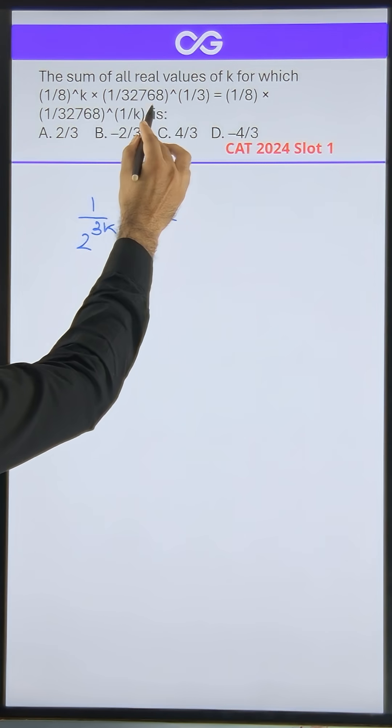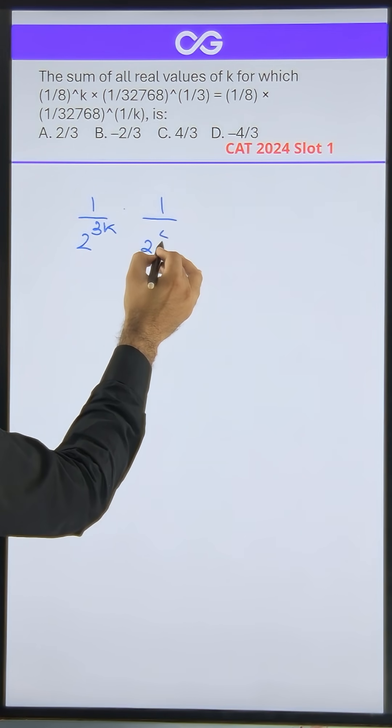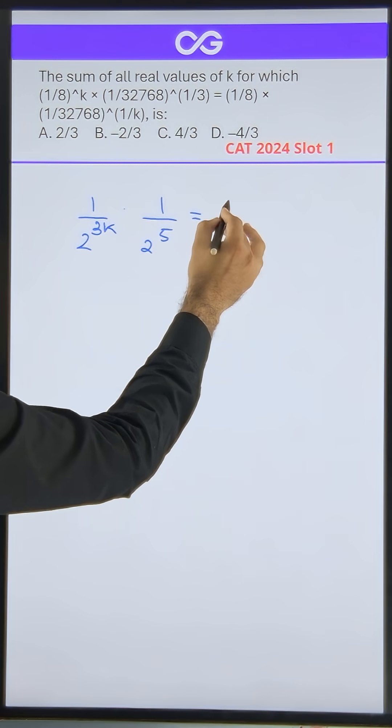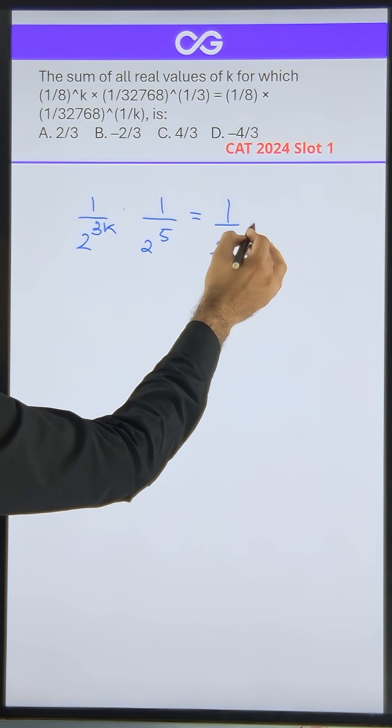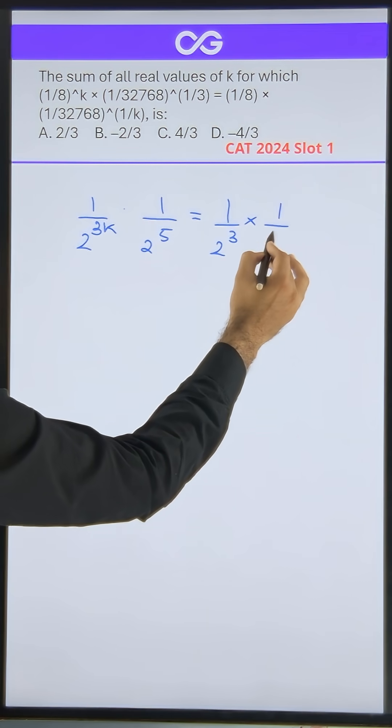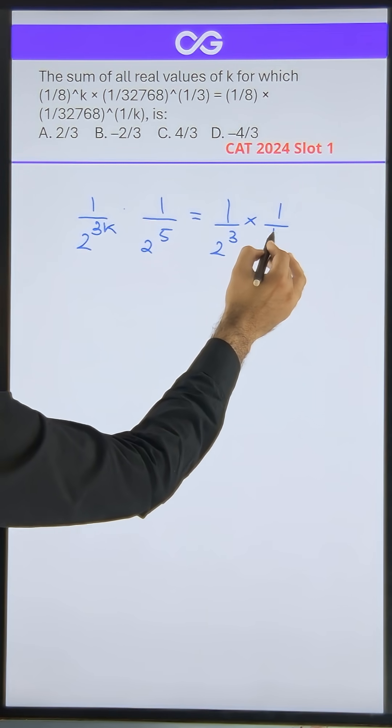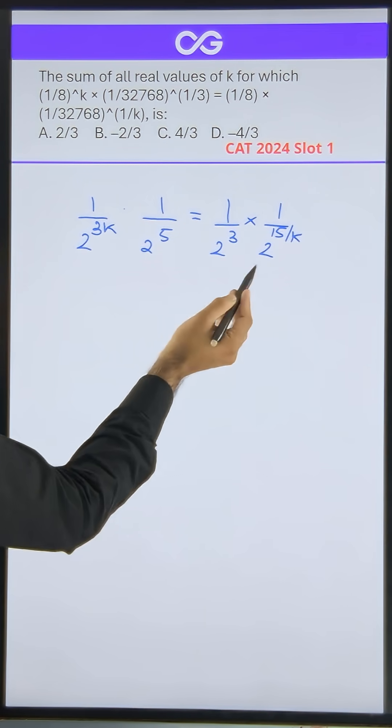Into—you will get 1 by 2 to power 15 divided by 3, so it will become 2 to power 5 is equal to 1 by 8, which is 1 by 2 cube. Into, this is 2 to power 15, so I can write it as 2 to power 15, 1 upon k. So remember, this will be 15 by k.